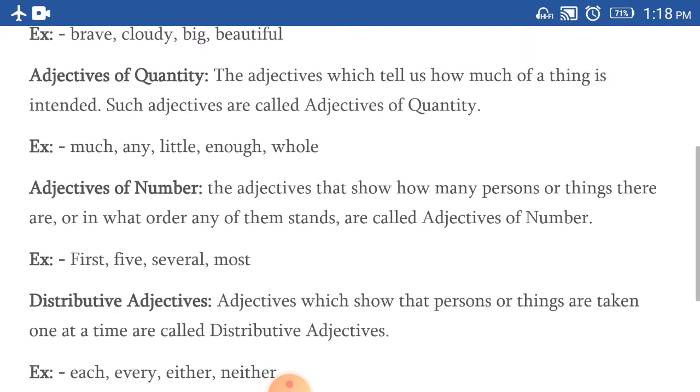Third is adjectives of number. The adjectives that show how many persons or things are there, or in what order any of them stands. These are called adjectives of number. Yahan ek certain number ya ek certain order ki baat ho rahi hai. Ram is first in class, so first is adjective of number. There are five students in the class, so five is adjective of number.